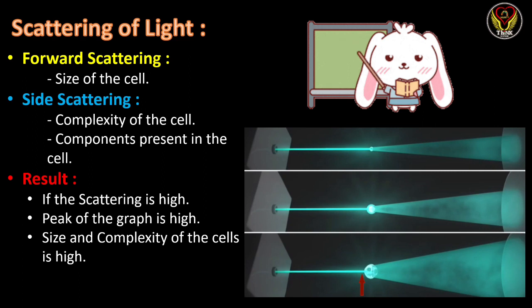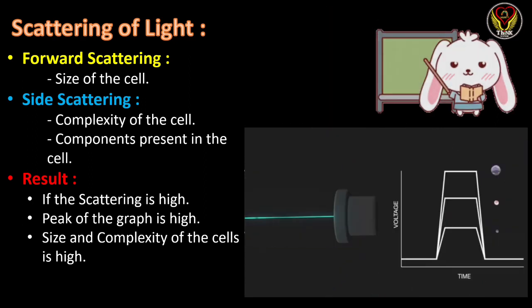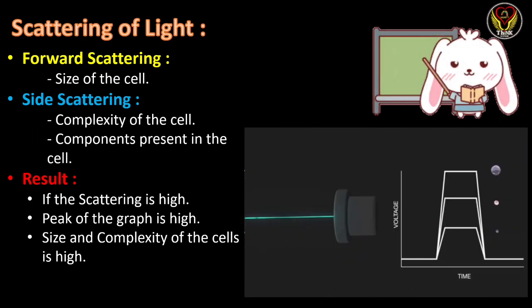With forward scattering we can study the size of the cell. In small cells, forward scattering is less, whereas in large cells, forward scattering is more, producing more signals to the detectors. Simply: small cell size means small forward scattering; large cell size means large forward scattering. In side scattering we can understand the complexity and internal structures of cells — if the cell is highly complex with more internal structures, the side scattering signal will be high, and vice versa. Scattering results are converted to signals and recorded as graphs.